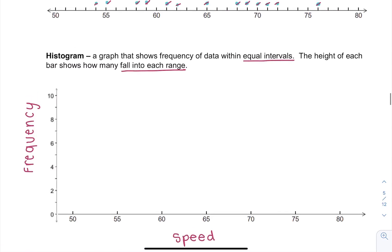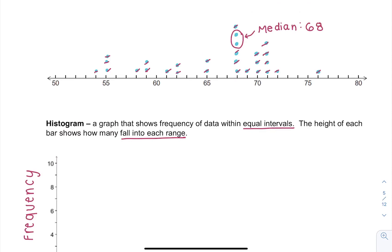So what I'm going to do is make intervals. So I'm going to make my first interval from 50 up to 55 but not including it, then 55 up to 60 but not including, so I'm going to make these equally spaced intervals.